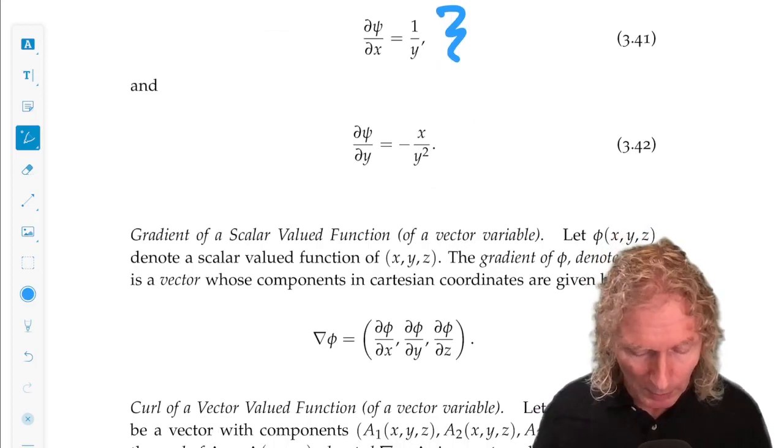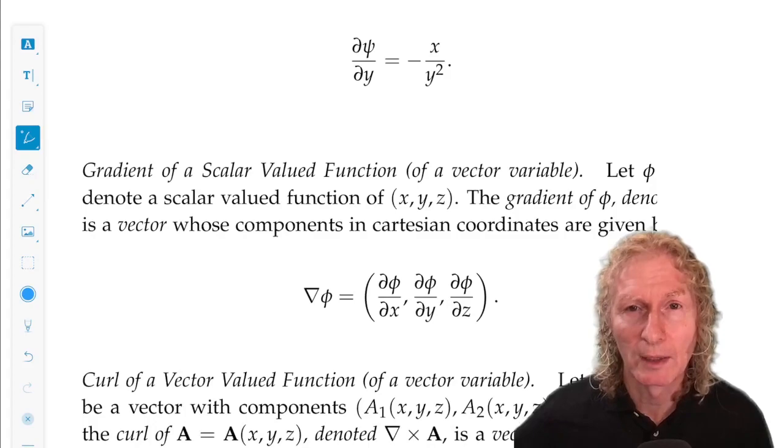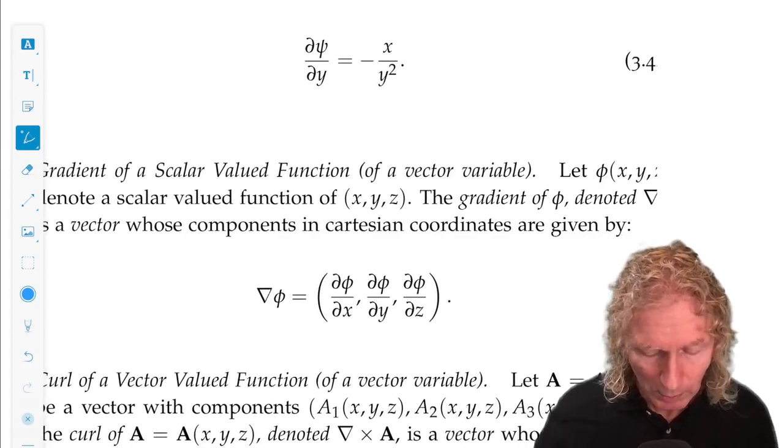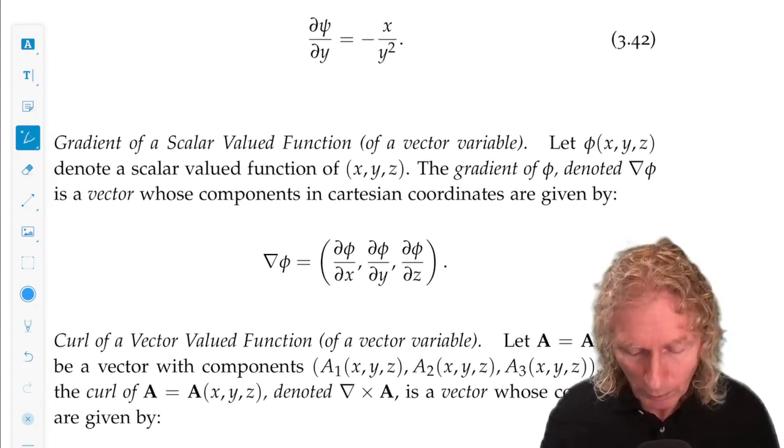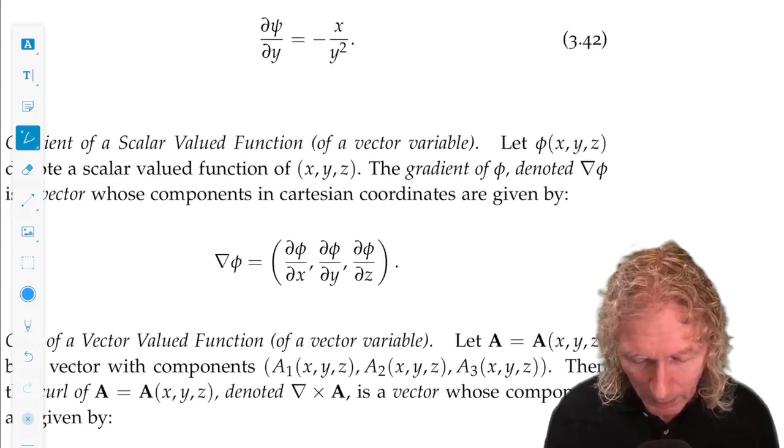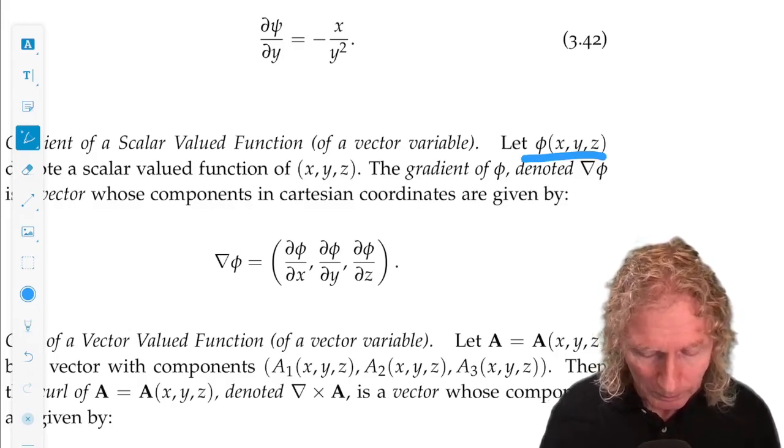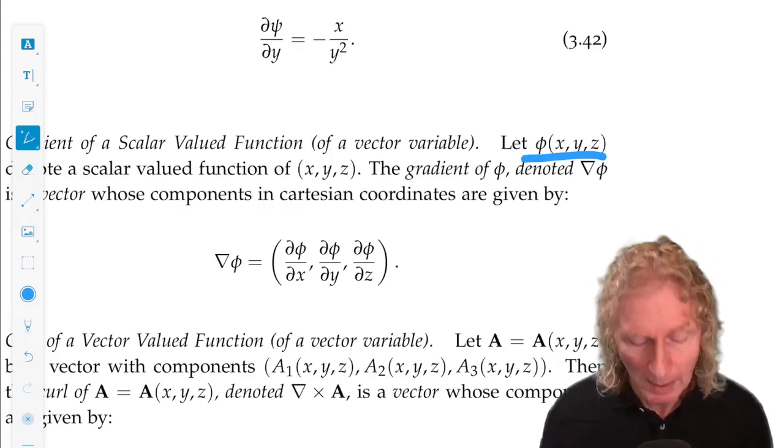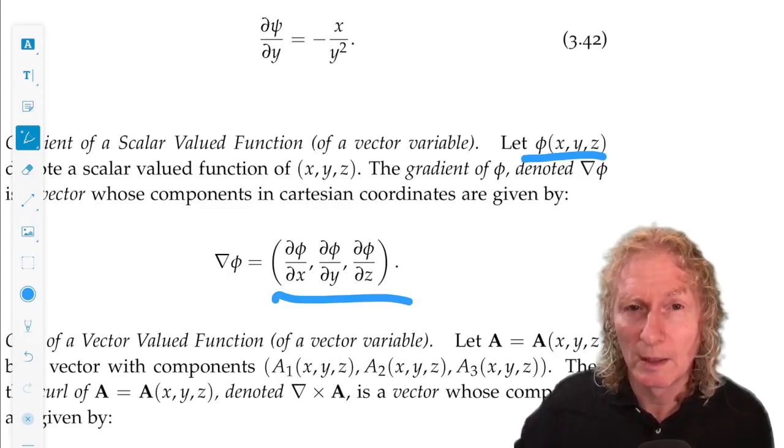Now, I did that because I want to introduce two ideas, the gradient of a scalar valued function of a vector variable. And you're going to learn a lot about gradients when you learn about calculus of several variables. So let phi of x, y, z be a scalar valued function of the vector variable. So the gradient is just a vector, and the vector is the vector of partial derivatives. Now, important to realize, phi is scalar valued, but its gradient is vector.